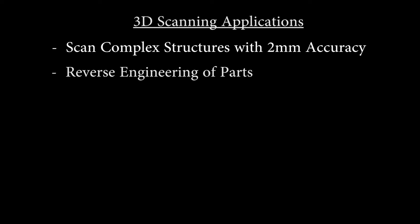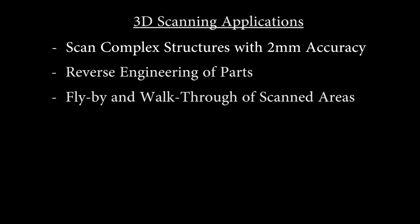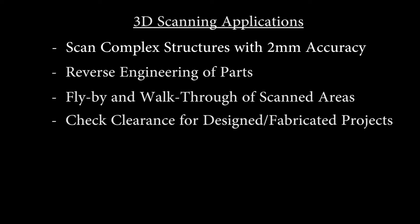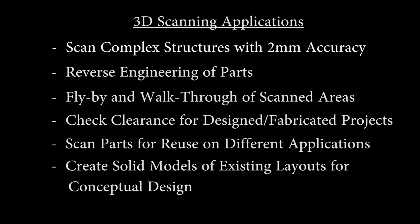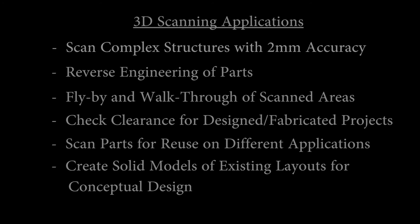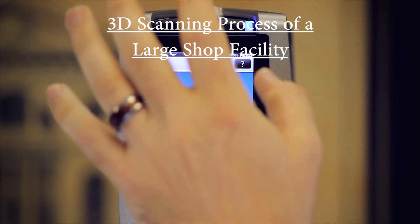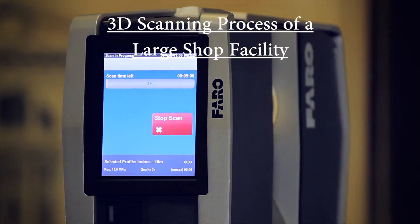and Inventor. These are some of the applications for 3D scanning: the ability to scan complex structures with an accuracy of 2 millimeters, the ability to reverse engineer parts from collected scanned data, the capability to perform a walkthrough of scanned areas for project information, the capability to check for clearance for a designed assembly, the capability to scan parts and/or machines for re-application in other locations, and the ability to create solid models of existing layouts for conceptual design. Now you will see an example of the scanning process from the initial scans to the processed data.